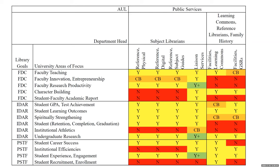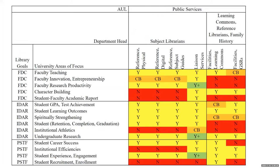This is an example of part of a library impact map. University areas of focus are the headers for rows and library services are headers for columns. The intersection is where codes are placed indicating the degree of data collection, use, and sharing. In 2013, as part of our first library impact map assessment, we modified the original map by connecting library goals to each university area of focus and designating departments, subject librarians, and divisions for each library service to allow further disaggregation.